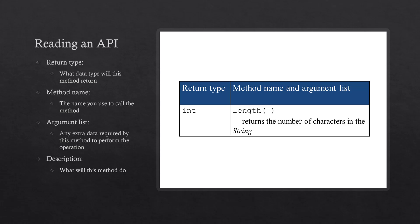Looking at the length method in the string class API, you'll see the return type — the type of data you get back after the method executes. The return type for length is an integer, so we need to do something with that integer: print it out or store it in a variable. You can also see the method name and the argument list — what values the method takes inside parentheses. Empty parentheses means this method doesn't require any extra data to perform its operation.